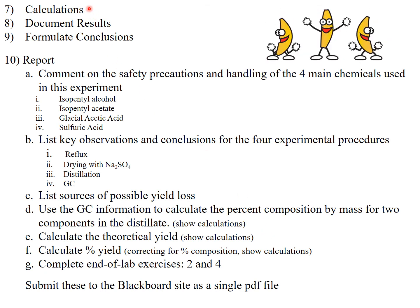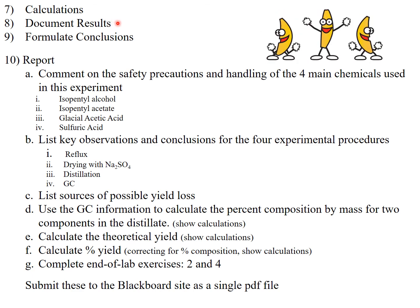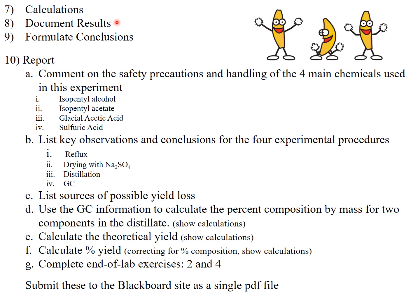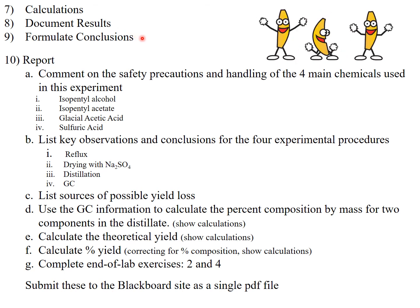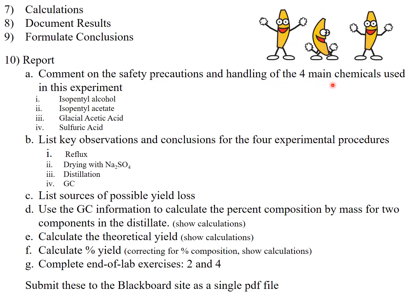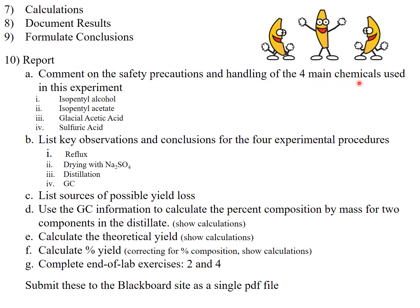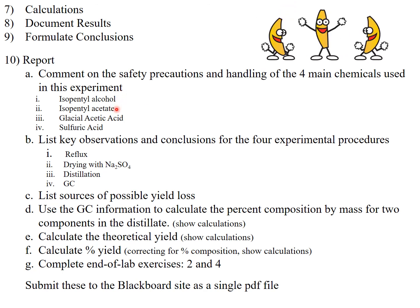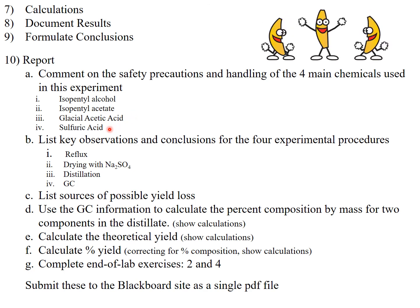We're going to do some calculations and document our results in our notebook pages, and formulate conclusions and discussion in your report. In your report, I want you to comment on the safety precautions for the four main chemicals used in this experiment: isopentyl alcohol, our product isopentyl acetate, glacial acetic acid, and sulfuric acid.